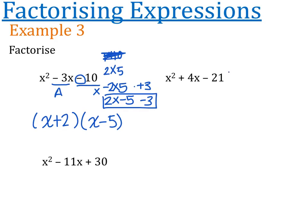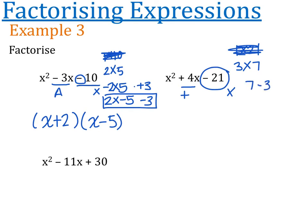The next one has minus 21, so it has to multiply to minus 21 and add up to positive 4. Factors of 21: 1 times 21, and 3 times 7. It's definitely not 1 and 21, but it could be 3 and 7. How do we make 3 and 7 into 4? We do 7 take away 3, so that means it's positive 7 and negative 3. So the answer is (x + 7)(x - 3).